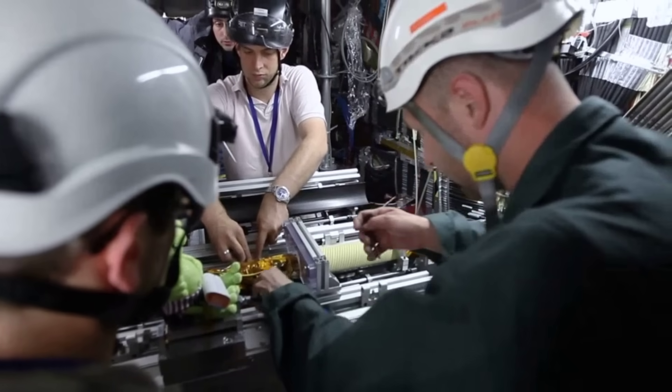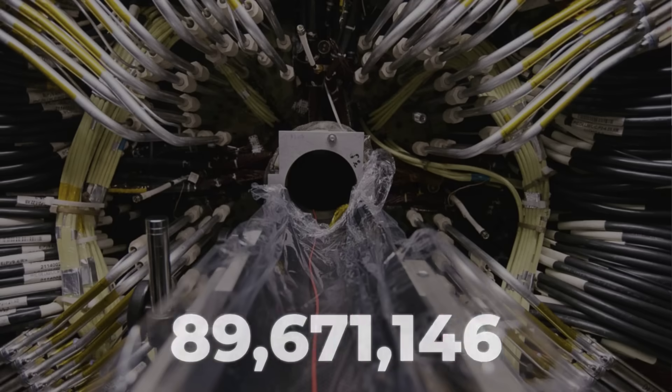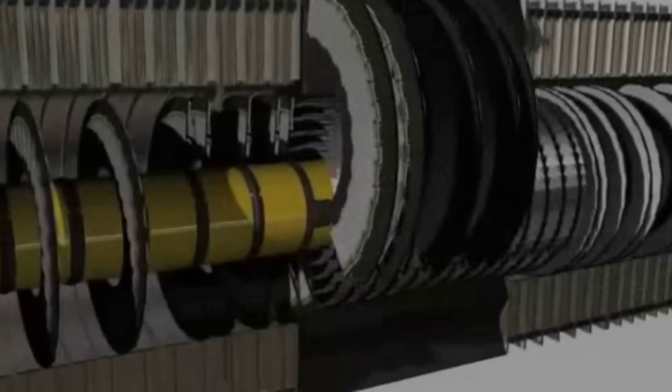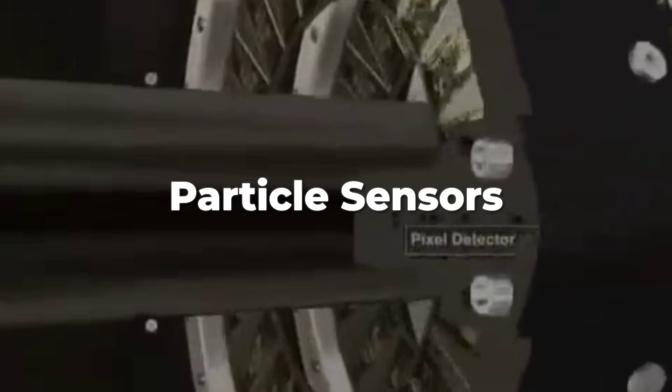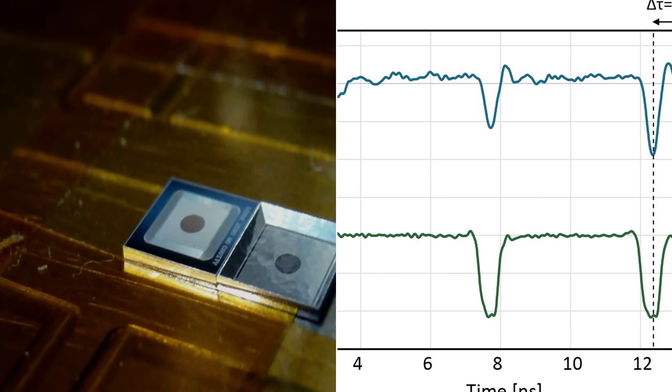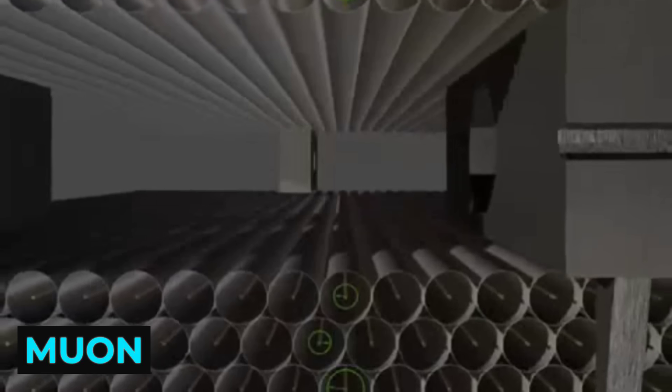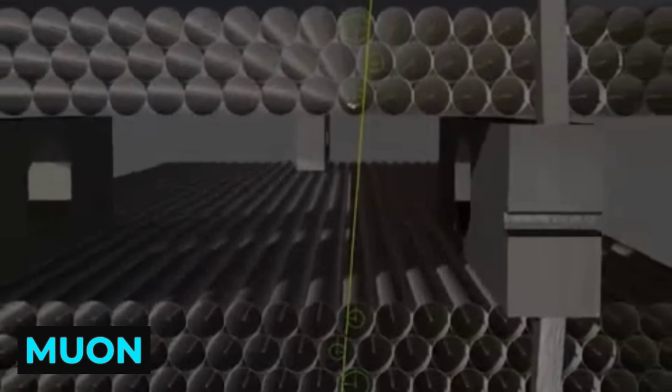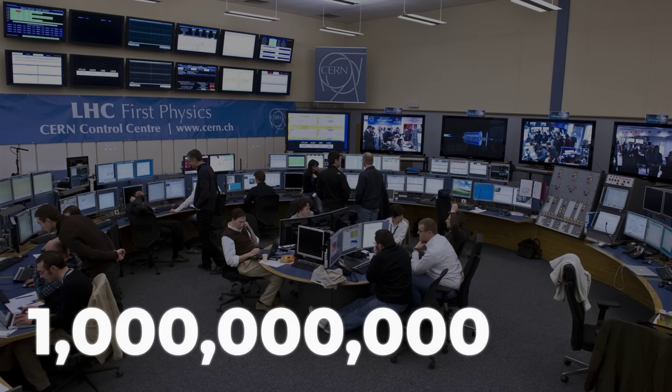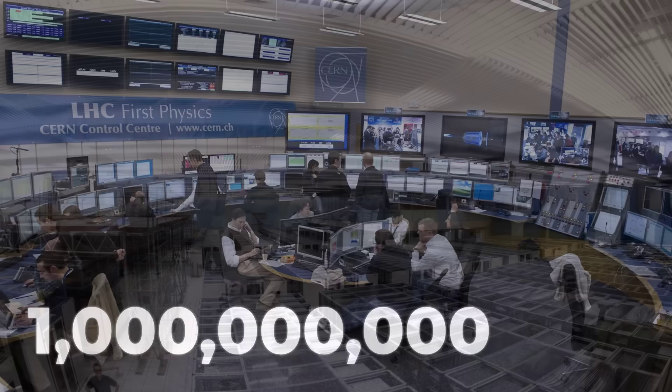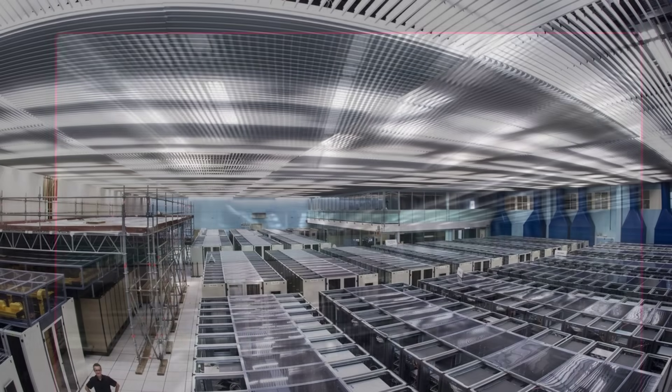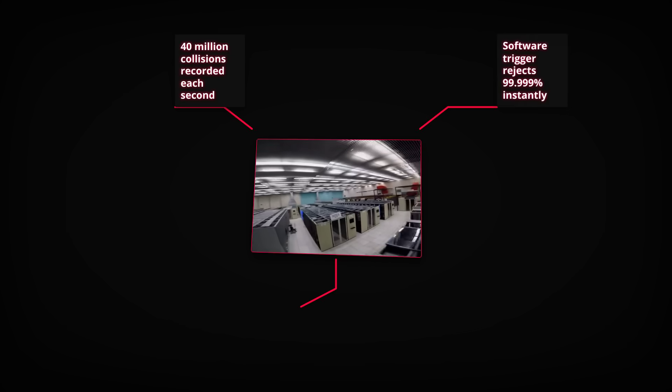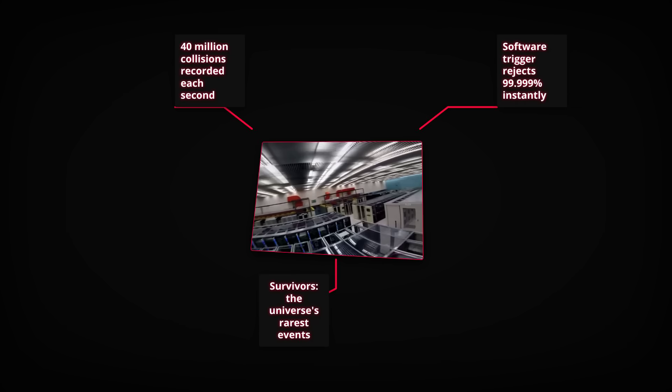ATLAS isn't just big, it's astonishingly sensitive. More than 100 million sensors are wired into its core, each one tuned to catch the tiniest shreds of evidence from particle collisions. Imagine a digital eye that can see a single photon flash in a blizzard of debris or trace the faint curl of a muon as it escapes the chaos. These sensors record the aftermath of up to a billion collisions per second, generating a data torrent that would fill a stack of DVDs stretching to the moon every year. Yet only the rarest, most interesting events survive the detector's ruthless digital triage.